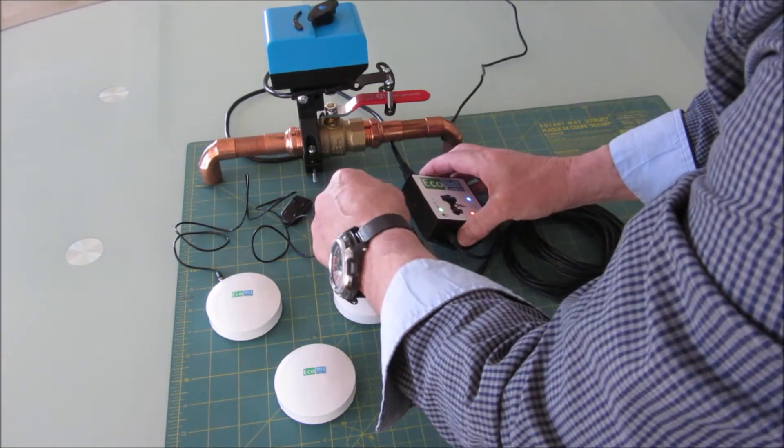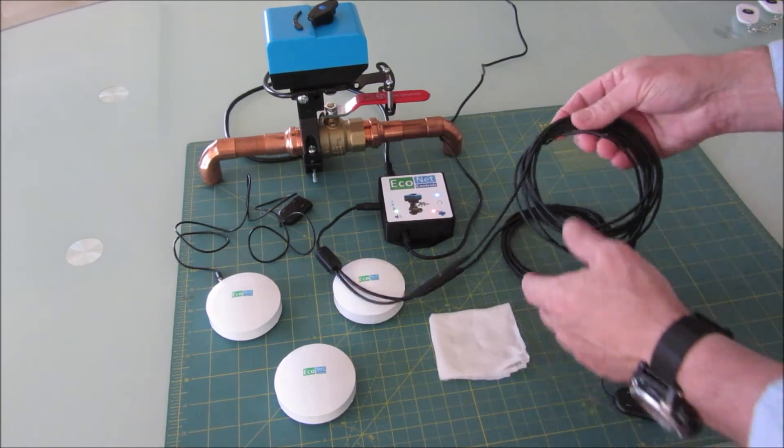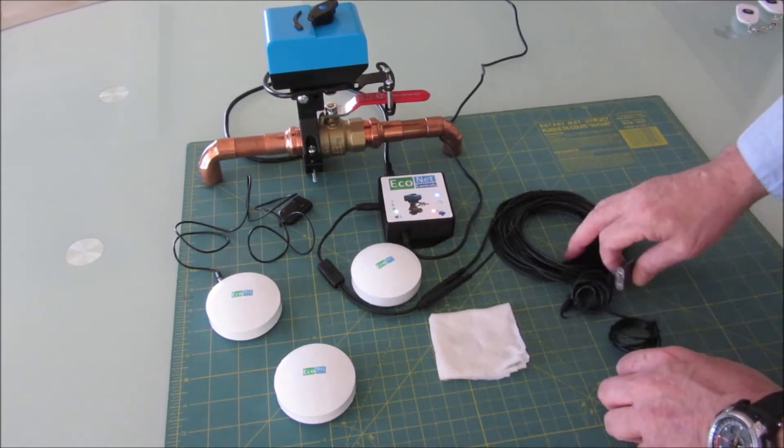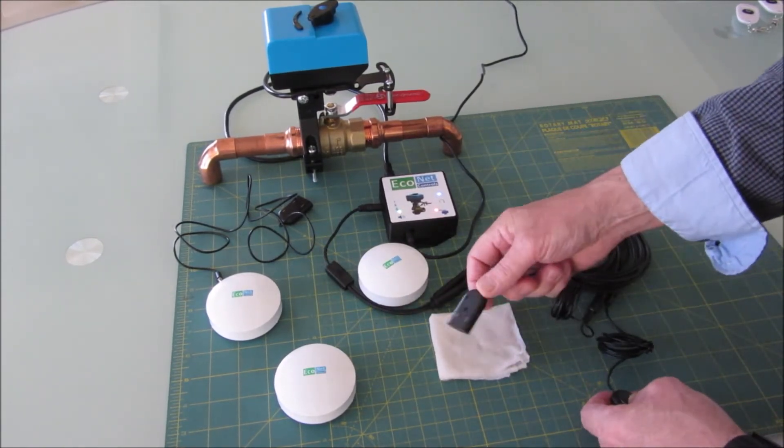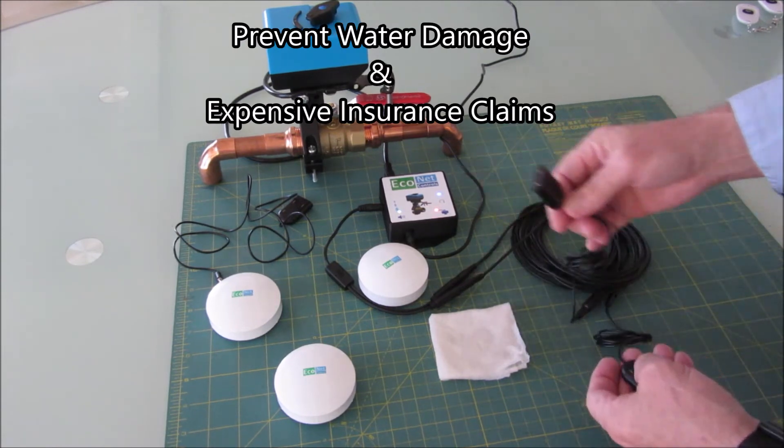So this is the splitter, the two 10 foot extensions, and the two leak sensors. If any of these gets wet, it shuts off the water.